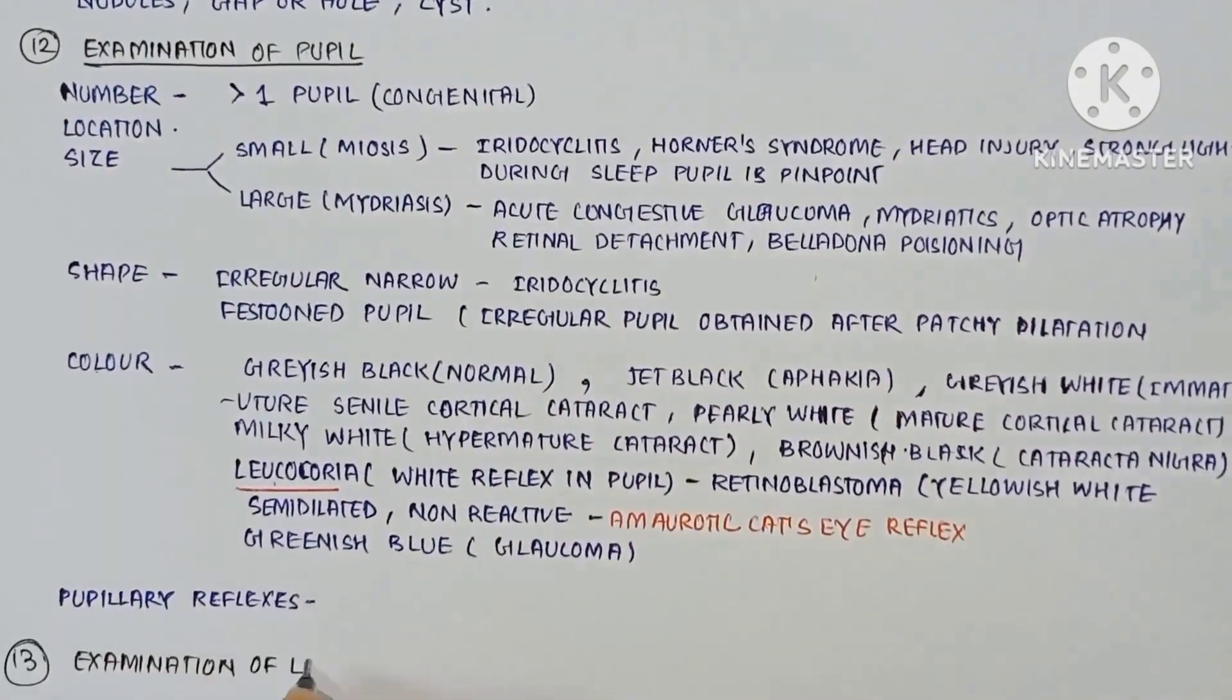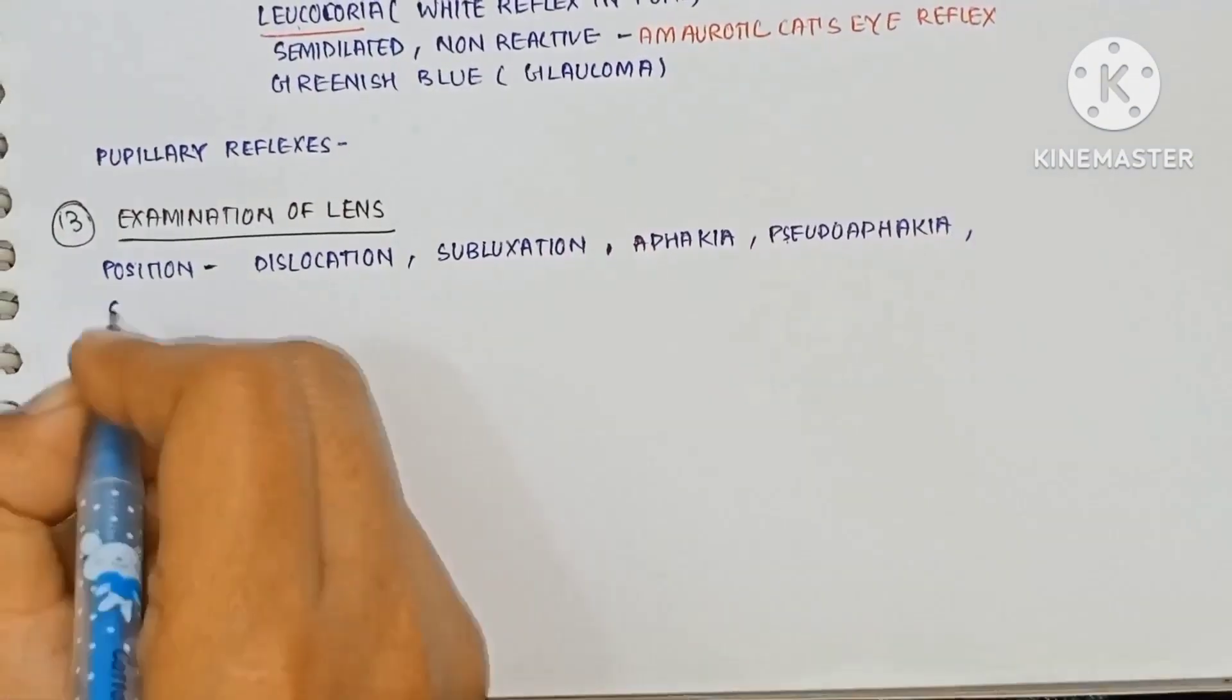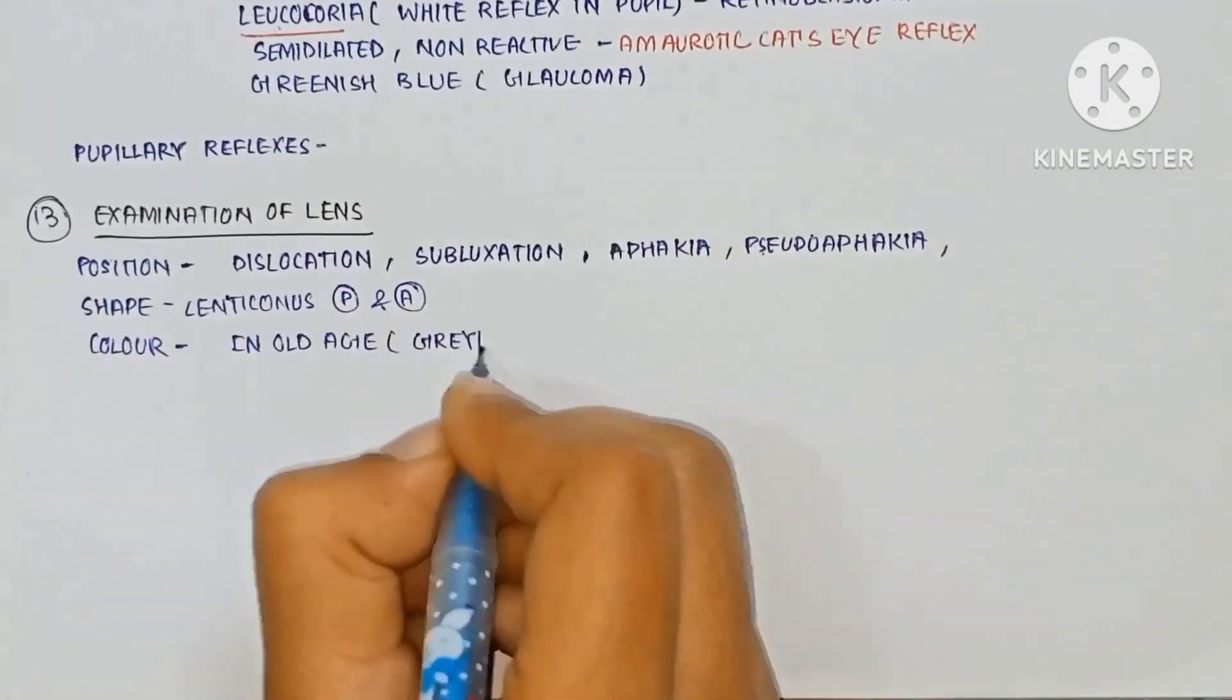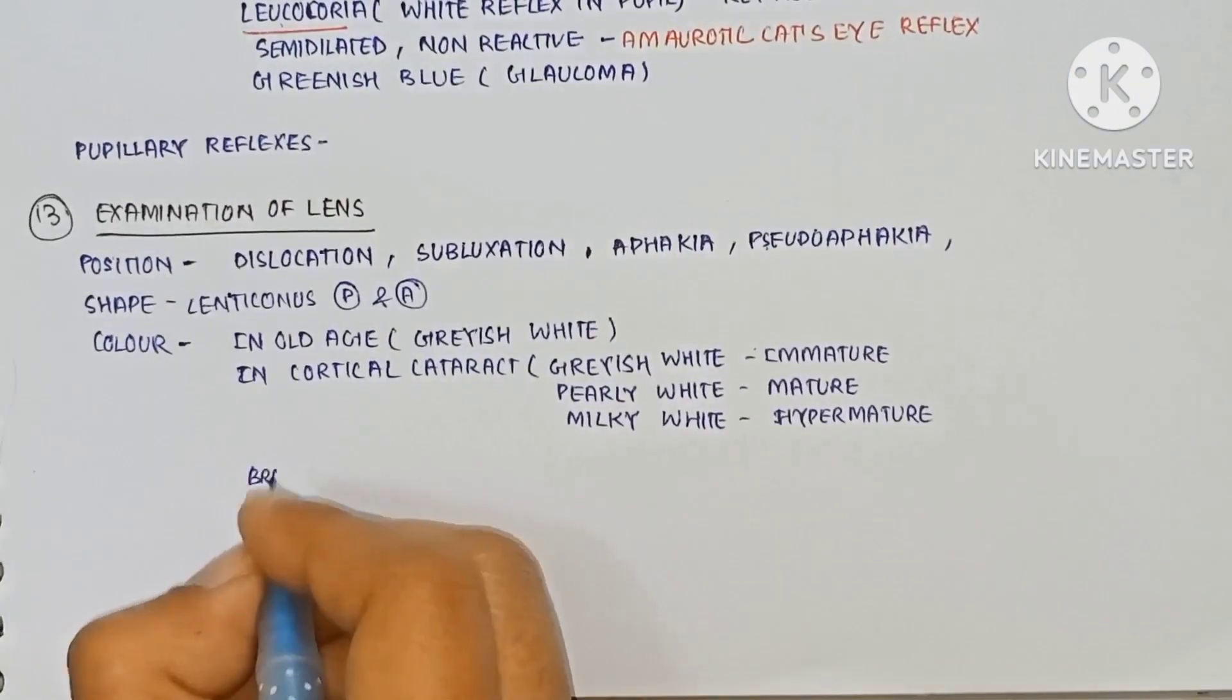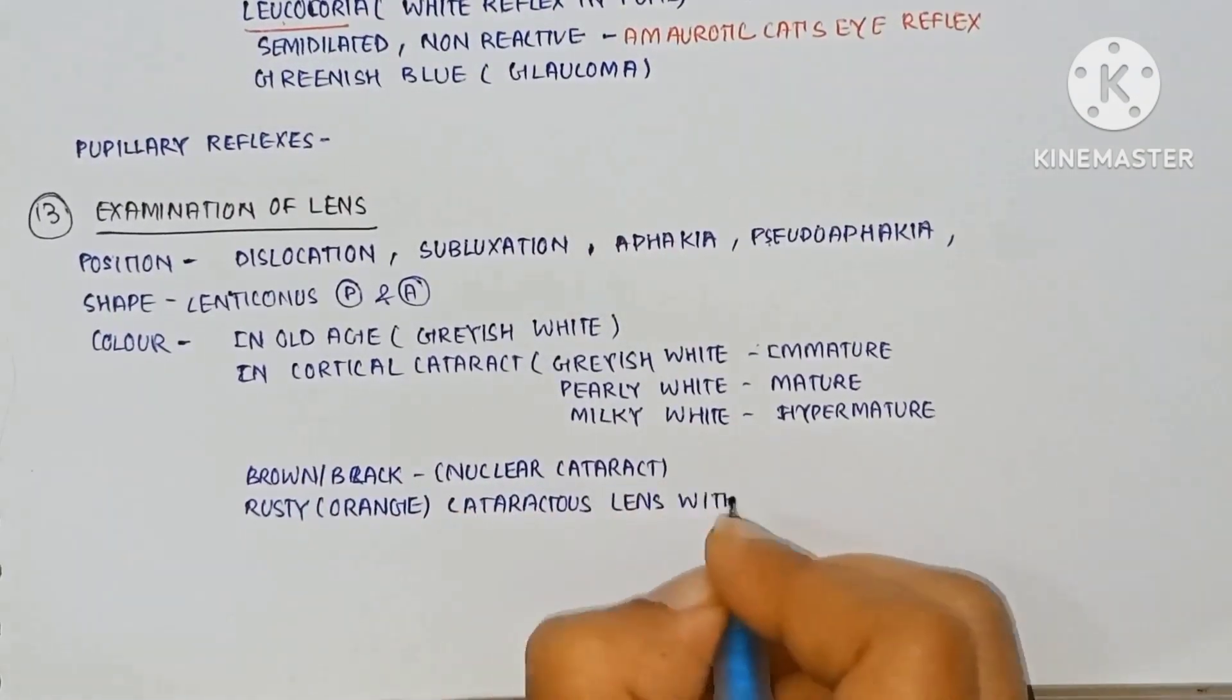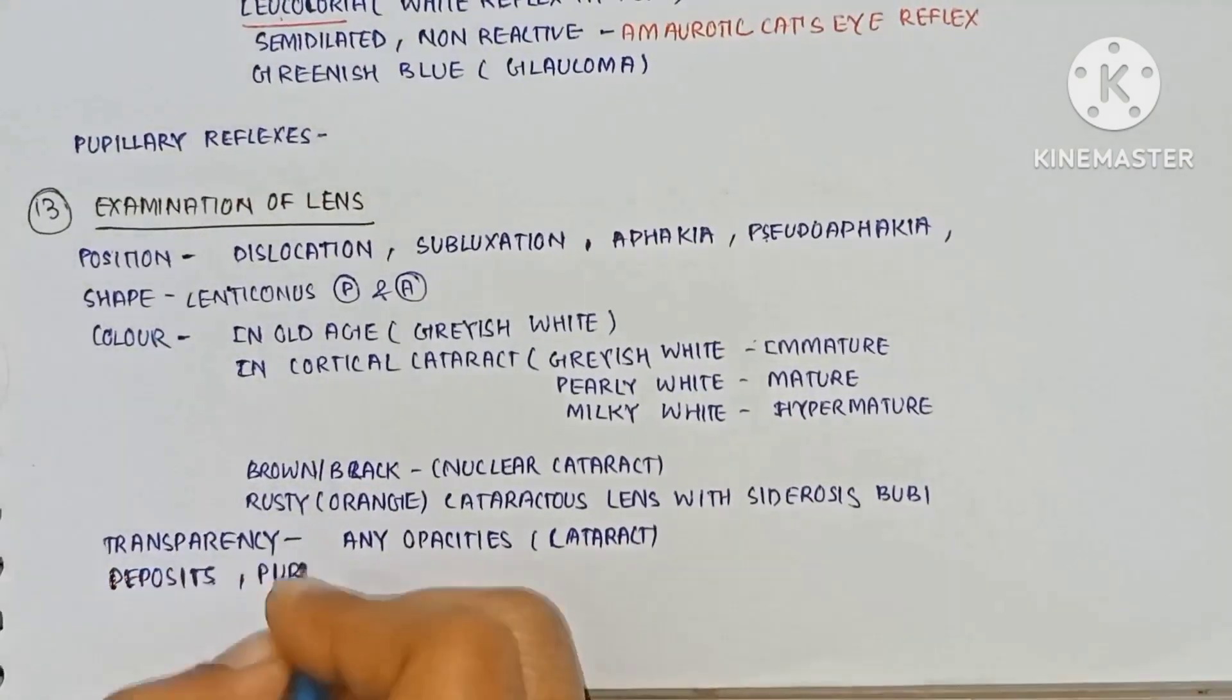The examination of the lens, the position: dislocation, subluxation, aphakia, pseudoaphakia. The shape is lenticonus posterior and anterior. The color in old age, grayish white in cortical cataract, grayish white in immature, pearly white in mature, milky white in hypermature, brown or black nuclear cataract, rusty orange cataract, lens with siderosis in UV. The transparency, any opacity in cataract, the deposits and Purkinje images.